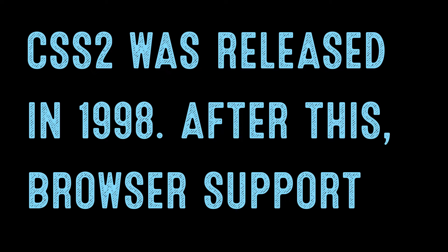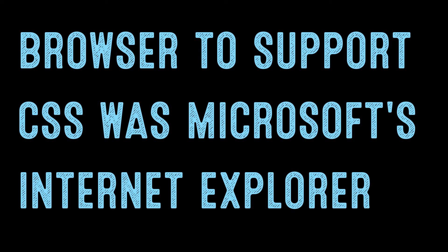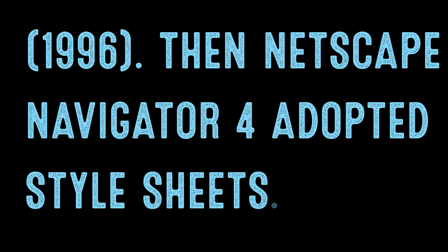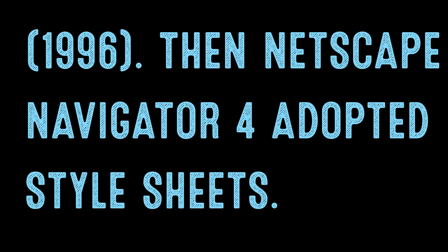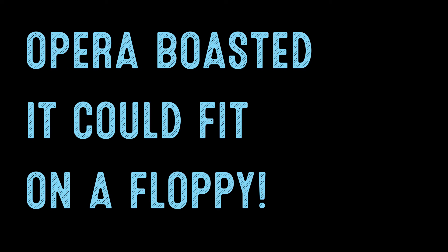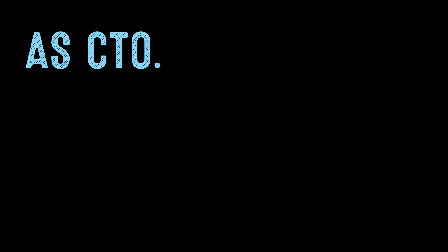After this, browser support drove CSS development. The first commercial browser to support CSS was Microsoft's Internet Explorer 3 in 1996. Then Netscape Navigator 4 adopted style sheets. Opera 3.5 by Geer Ivaroy followed in 1998. Opera boasted it could fit on a floppy. Hakan was impressed and joined the Norwegian company as CTO.